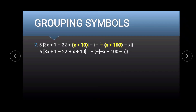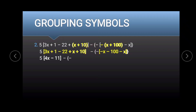Now let's work with the brackets. We combine like terms for each bracket. Copy 5, then 3x plus x gives 4x. For the constants, 1 minus 22 plus 10 gives negative 11. Then negative x minus x gives negative 2x, and copy negative 100.